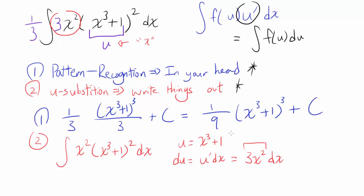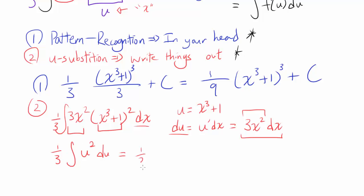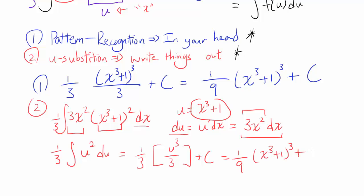Notice you want 3x squared here, so you multiply by 3 and divide by 3. The integral becomes u squared, and you have 3x squared dx which equals du. So you have one third times the integral of u squared du, which you can integrate easily to get u cubed over 3, plus C. Now we substitute back in — we want this in terms of x, not u. So we plug in x cubed plus 1 for u, giving us one ninth times x cubed plus 1 cubed, plus C.